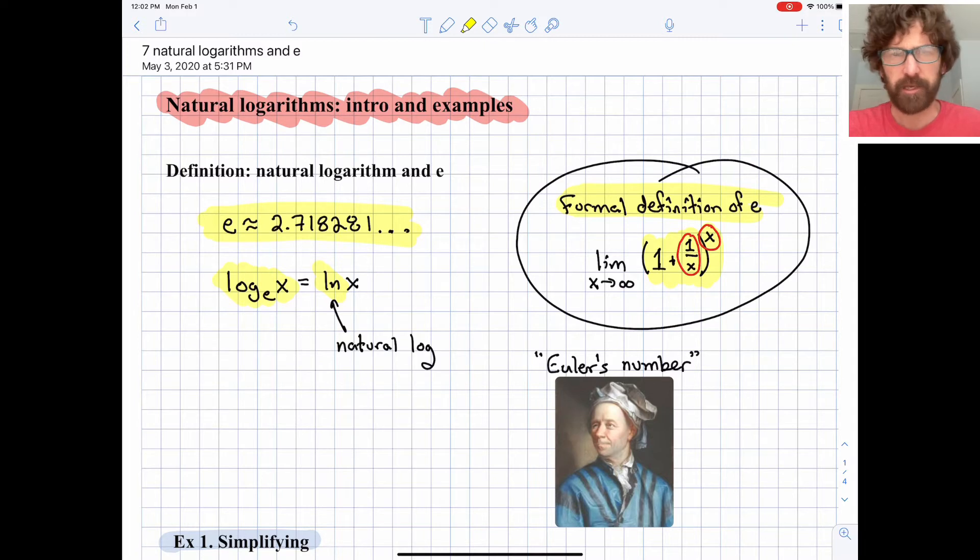And so we just have a different symbol that we use for it, the letters ln. It's more mathematically correct to refer to it as the natural logarithm of x and not ln of x. Here's a picture of Euler, by the way, one of the all-time great mathematicians who e is named after.